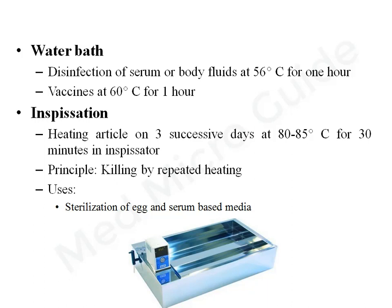In inspissation, we heat the article on three successive days at 80 to 85 degrees Celsius for 30 minutes using an instrument called an inspissator. On the first day, most vegetative bacteria are killed. On incubation, the spores present in the medium germinate and are killed in the subsequent heating. This is used to sterilize egg and serum-based media.